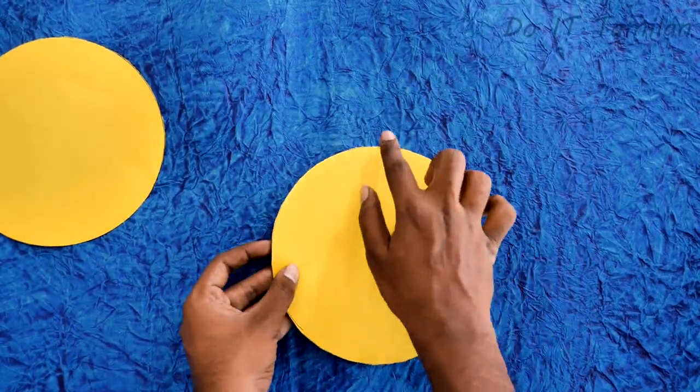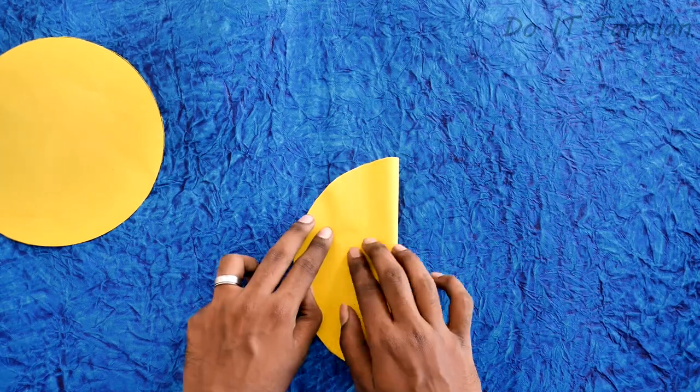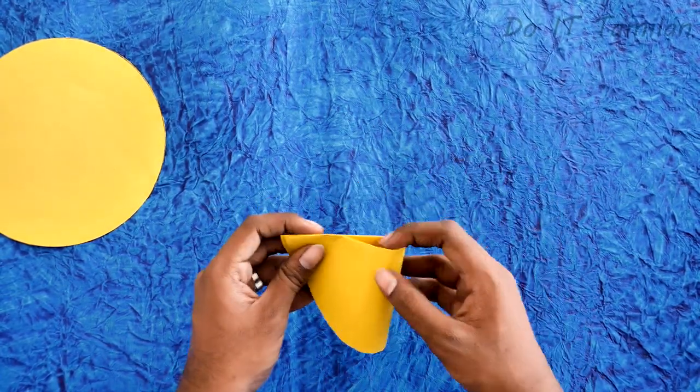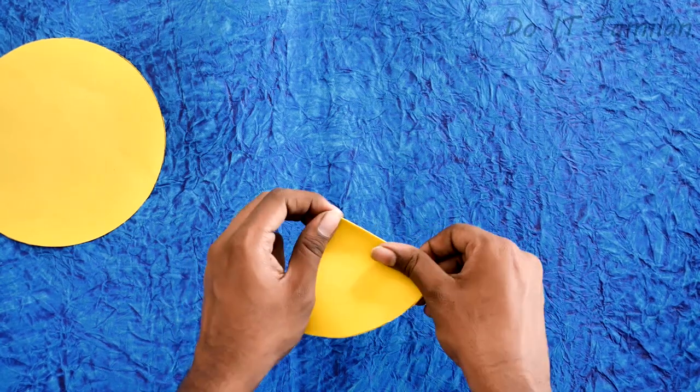So now we are going to cut the paper in a round shape. There are three steps. The first step is to fold the paper like this. Then fold the paper again like this.